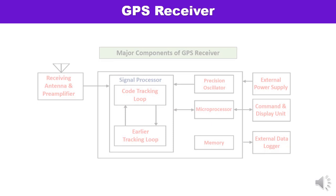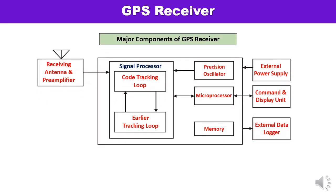Now let us understand what the major components of the GPS receiver are, and after this we will look at the block diagram. The major components of the GPS receiver are: antenna, RF section, tracking, precision oscillator, microprocessor, memory, power supply, command and display unit, and external data logger. Let us discuss each one by one.